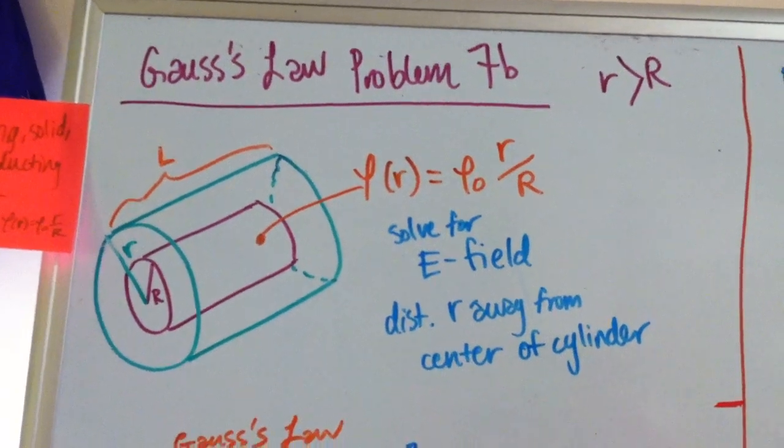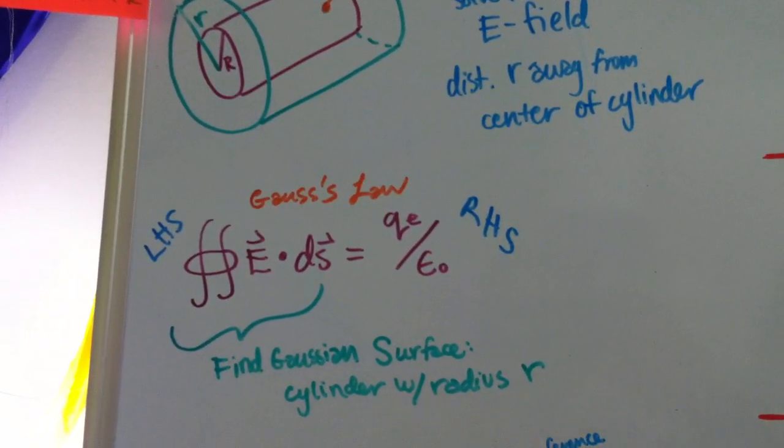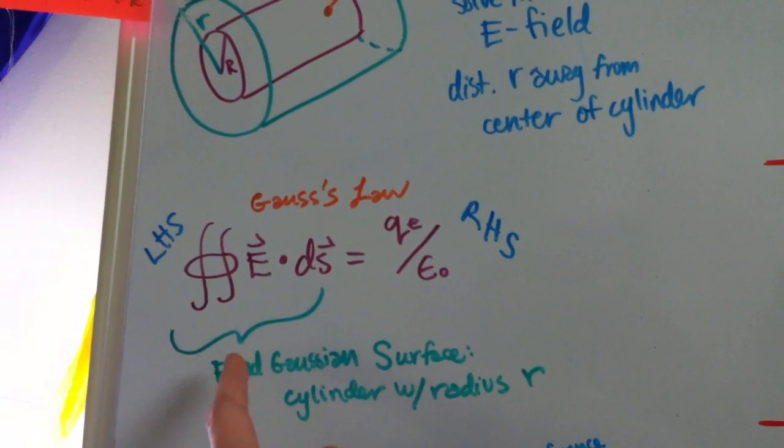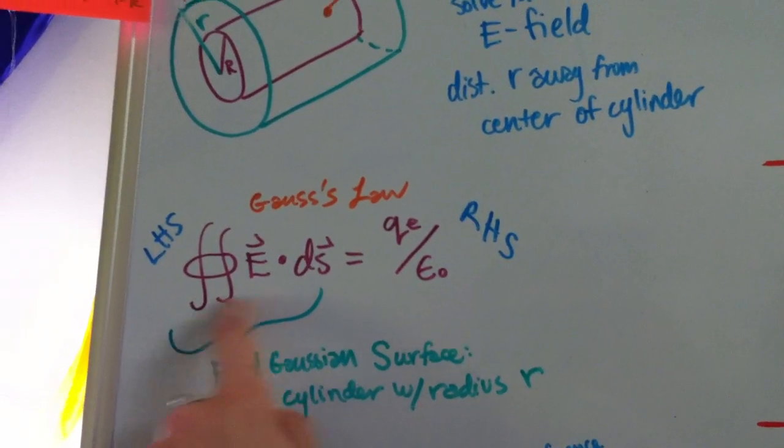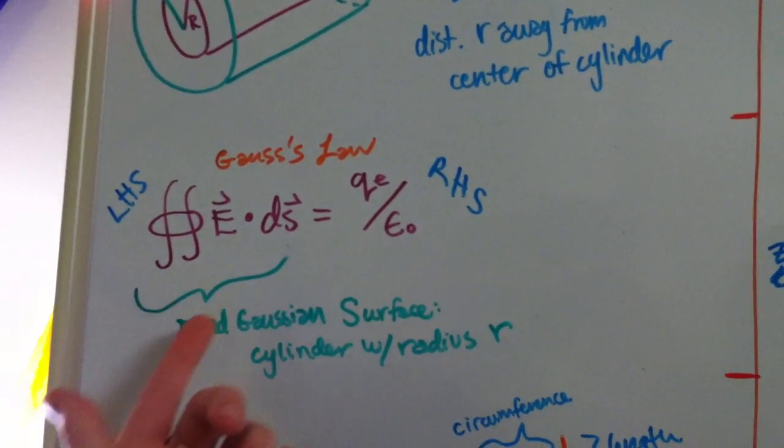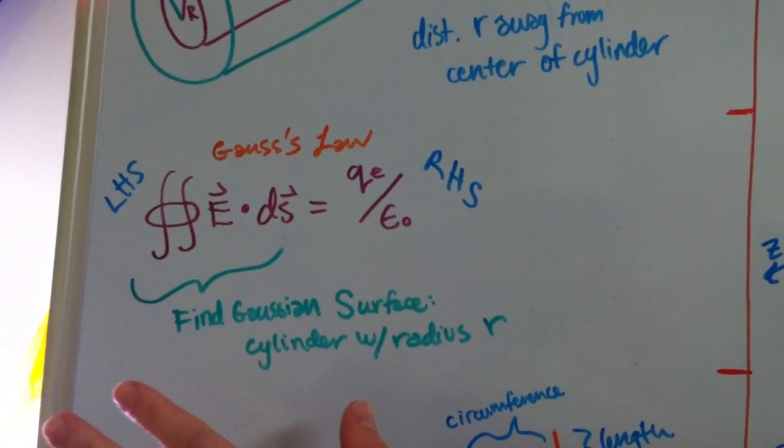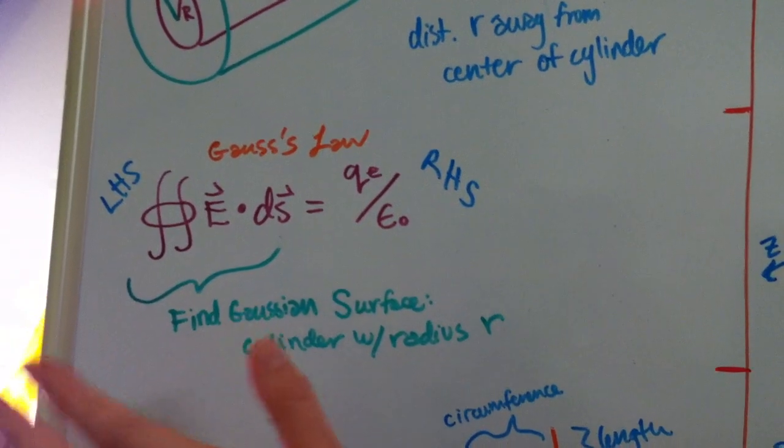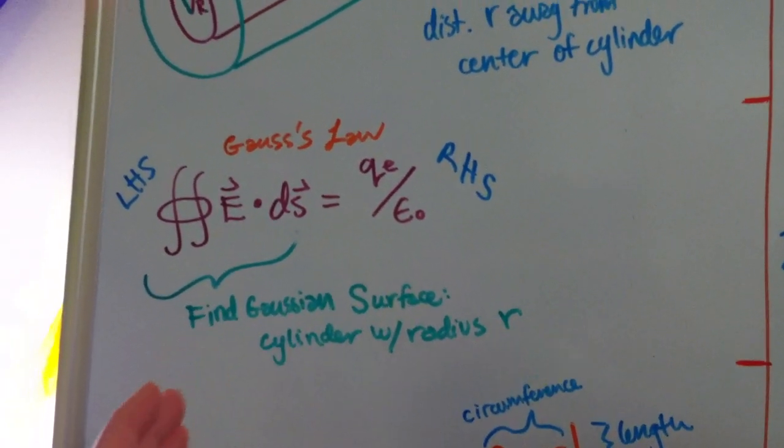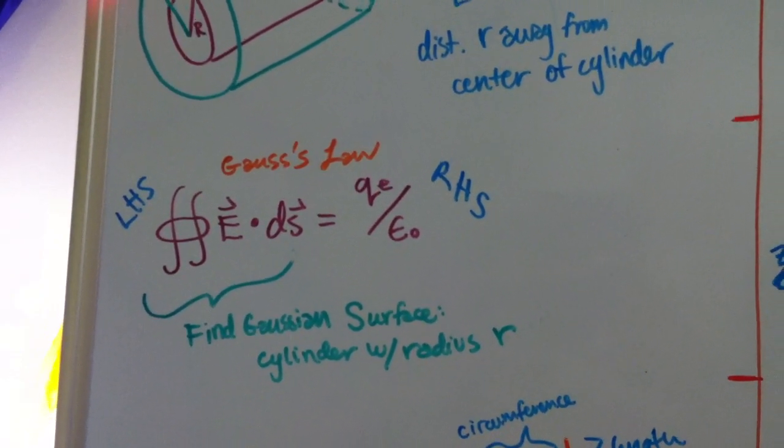So we're going to use Gauss's law for this, and we have the left-hand side and the right-hand side of Gauss's law, and we're going to start with the left-hand side. For the left-hand side, this basically means the surface area of the Gaussian surface times the electric field, and we can really simplify this side a lot by saying that we have a Gaussian surface, which means that